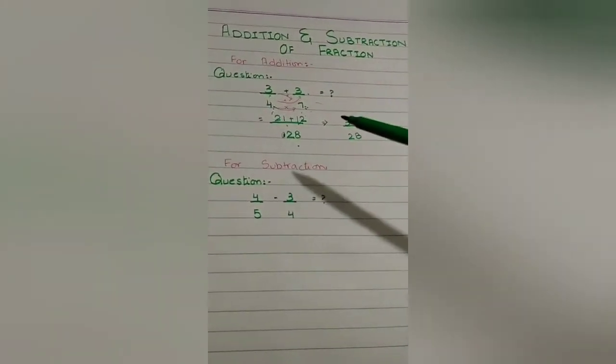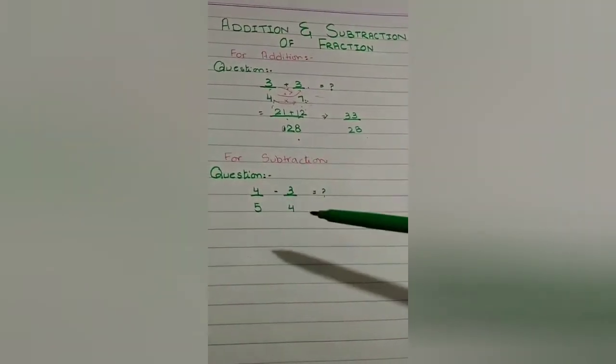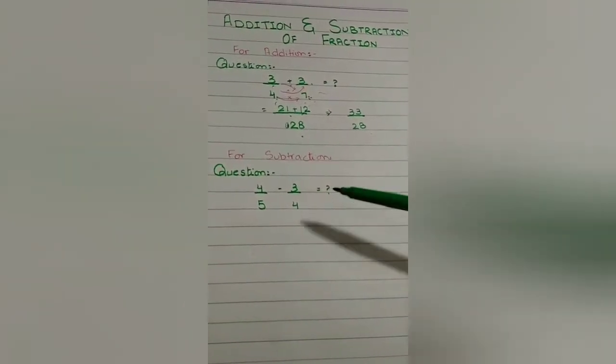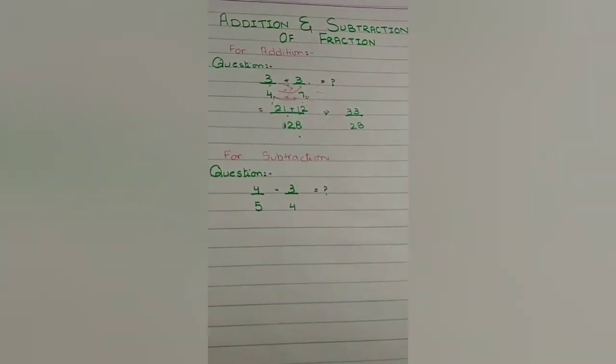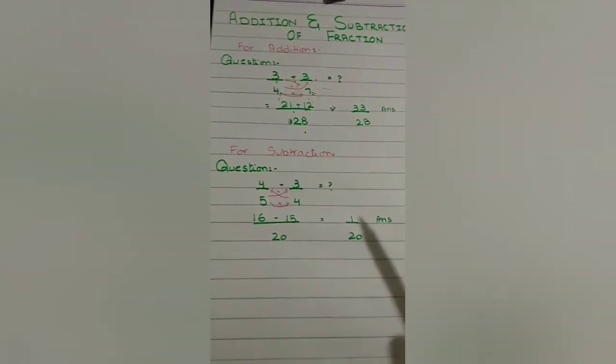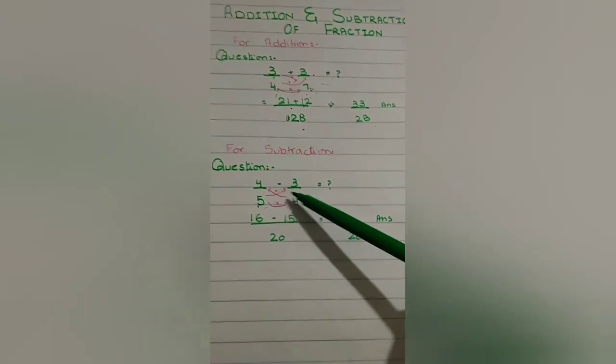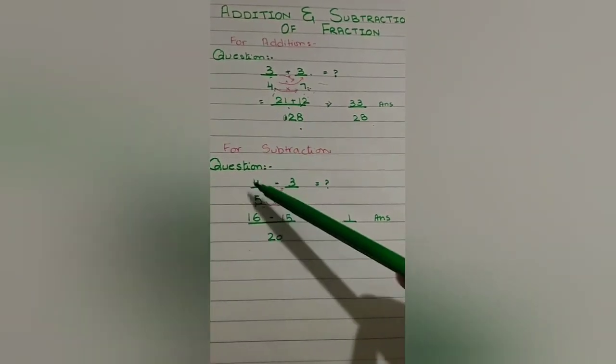This trick we use, we can use this trick. Here we solve with this trick. We have a trick: denominators we multiply, and this 4 and 5 multiply.